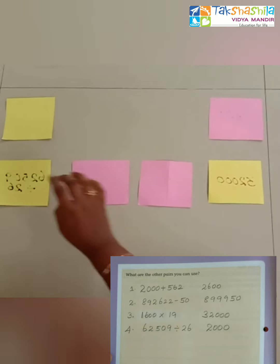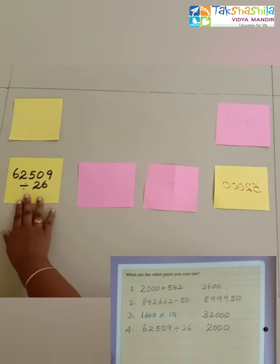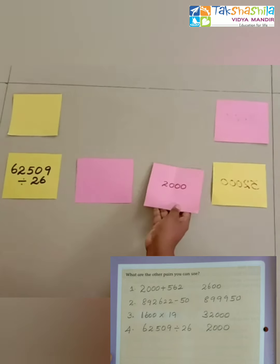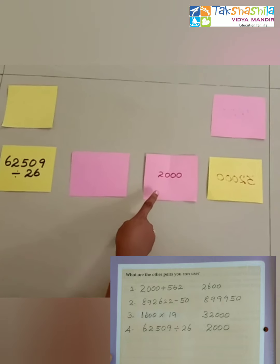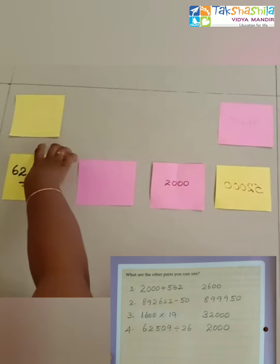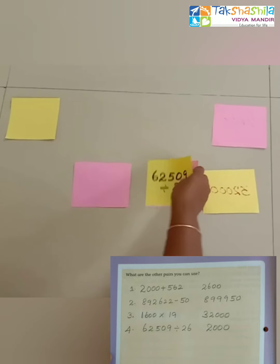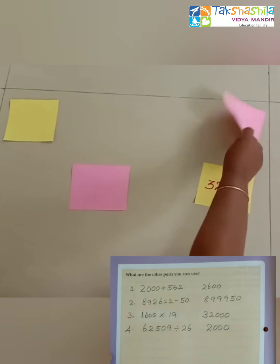We have to keep the cards aside and open another pair. Now see the next pair. It is 62,509 divided by 26, then the another card is 2000. Here the cards are matching, so we have to keep the cards aside.